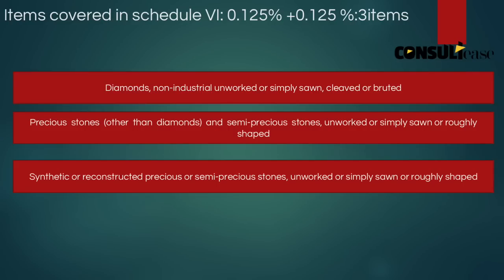So in summary, there are 6 schedules. You have to check your product's tax rate against these 6 schedules. We have uploaded all of these resources on our website, www.consultries.com.